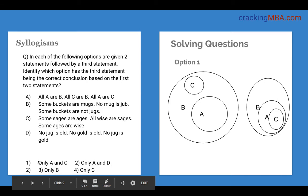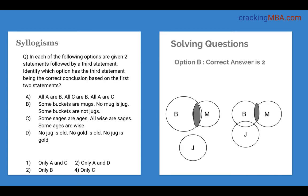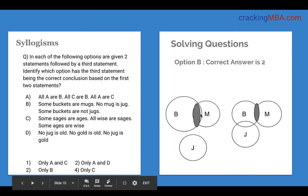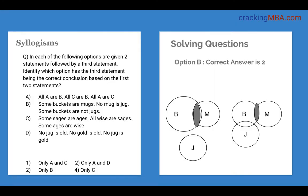Testing option B: some buckets are mugs, no mug is a jug. In scenario 1, B and M overlap and J is outside. In scenario 2, B and M overlap, J is not M but overlaps with B. The conclusion 'some buckets are not jugs' is valid because the gray area — buckets that are also mugs — can never be jugs, since no mug is a jug. This holds in all scenarios, so option B is correct, and the final answer is only B.